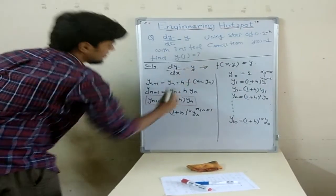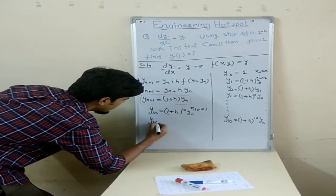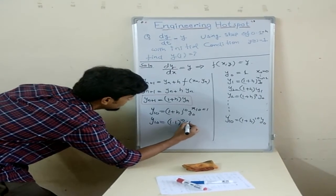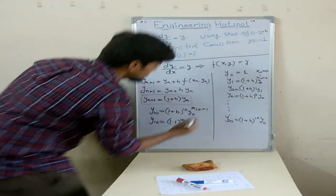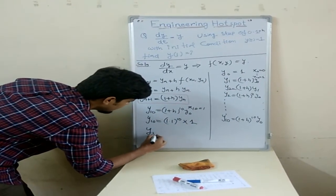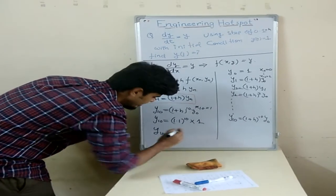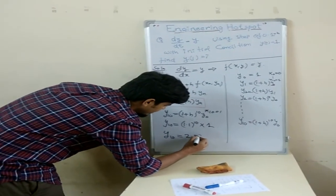Put h value here, 0.1. So y(10) equals to 1.1 to the power 10 times, what is y(0)? y(0) is 1. So here we get y(10) equals to 2.59.